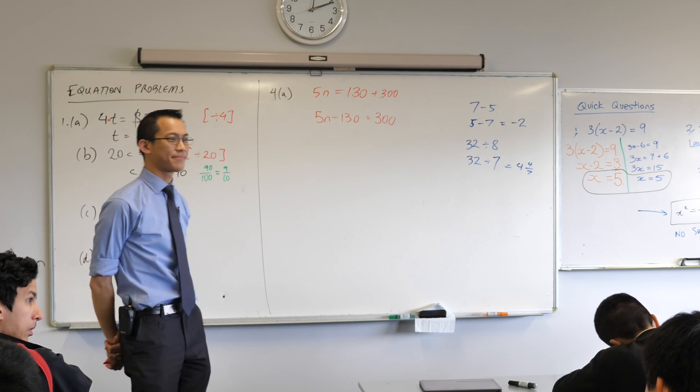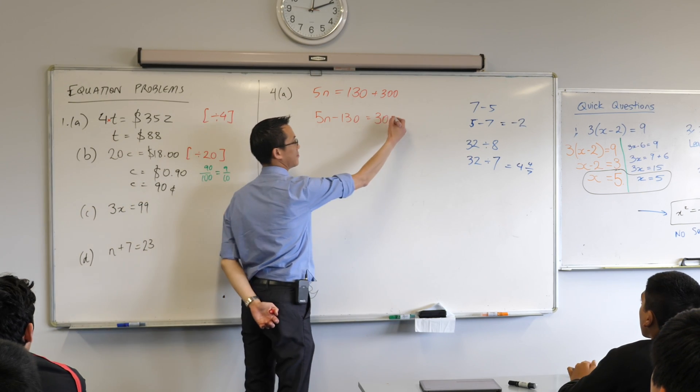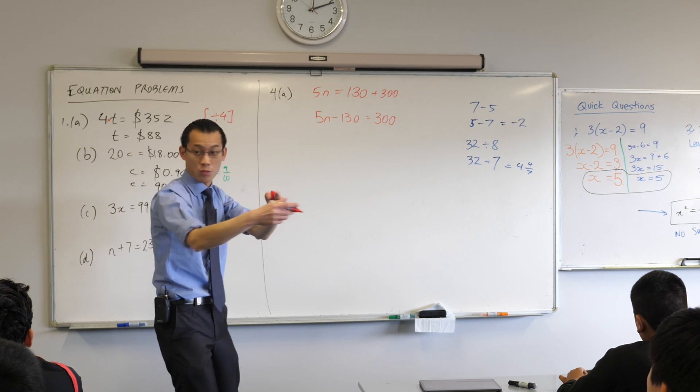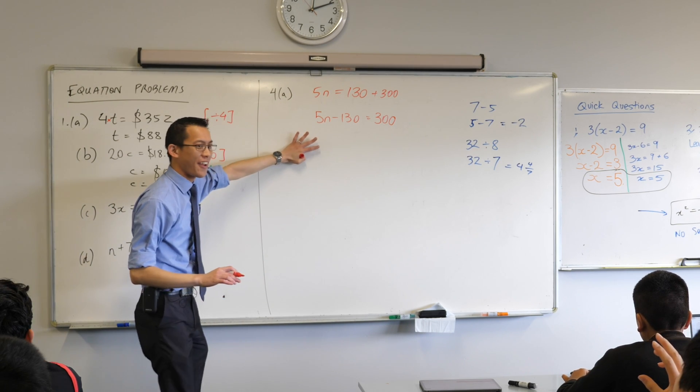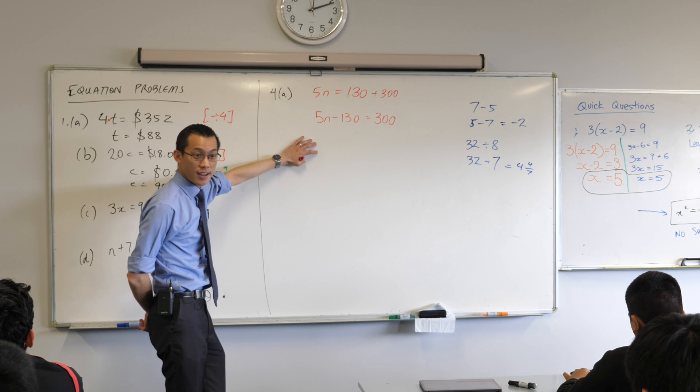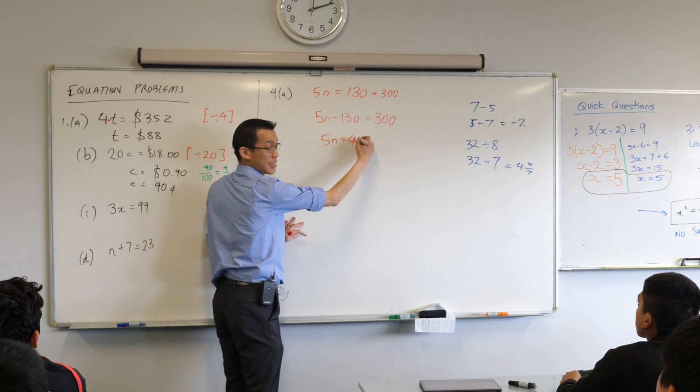Did someone have a different one again? Yeah go ahead Merrick. Sir because I felt like 130 is part of the 300 dollars. So you're now starting to think about which one we're going to go for. We're all going to have that discussion. I just wonder are there any other ones to add to the list? William did you have something? 5n equals 430. Is that where you went to? Okay good.